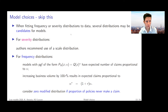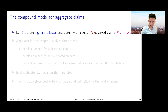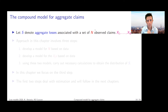We're going to skip a particular section — it's discussed in the book but you can just skip that. What we're going to do is look at the distribution of S: the distribution of the aggregate loss that comes with a set of N observed claims X1 up to XN. The approach we develop goes via three steps.